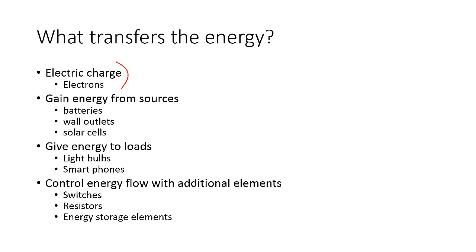So electrons gain energy from sources. And sources are things that you've seen before. They're batteries. They're wall outlets or solar cells or generators and that sort of thing. So energy increases at a source.